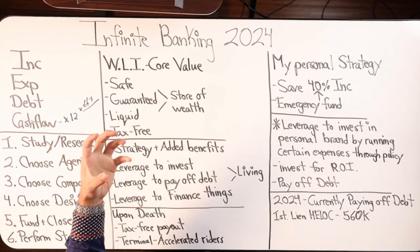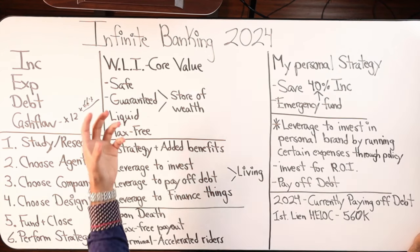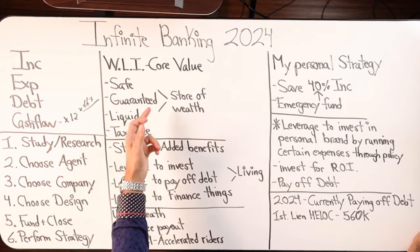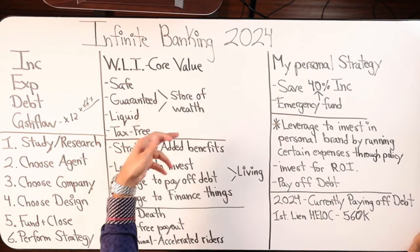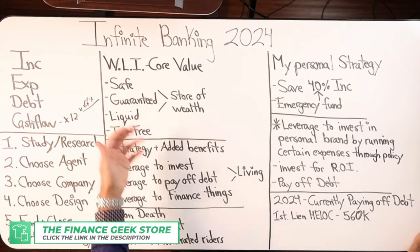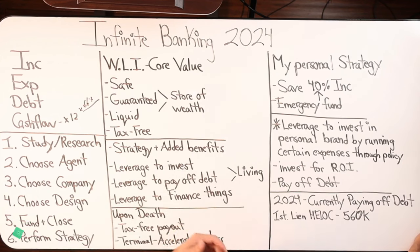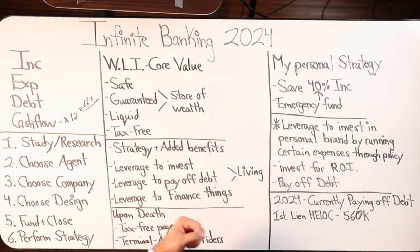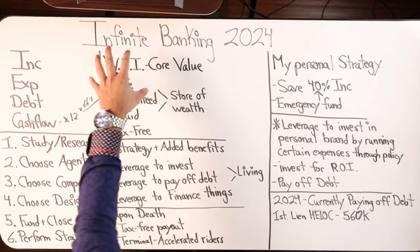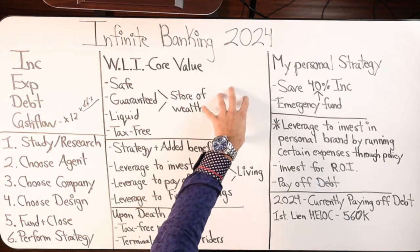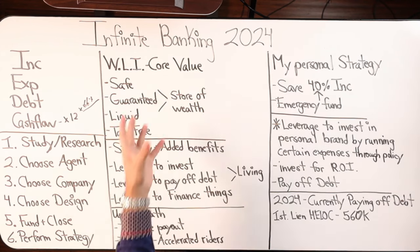There are codes in the tax code that protect a whole life insurance contract. It's one of the most protected assets in the marketplace today, and one of the very few products that can use the word 'guarantee.' Your 401k is not a guarantee. Your TSP is not a guarantee. Your IRA is not a guarantee. Your brokerage account is not a guarantee. This provides guarantees. So it is a safe, guaranteed, liquid, tax-free place for you to store wealth — it's a store of wealth.